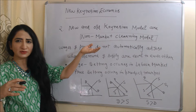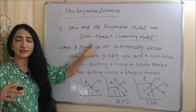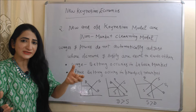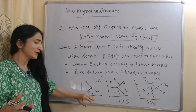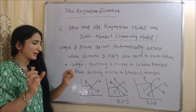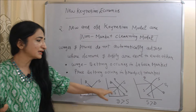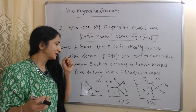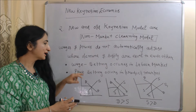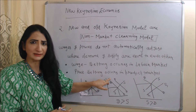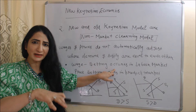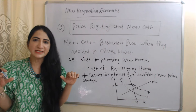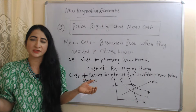Second, new and old Keynesian models are known as non-market clearing models, meaning prices and wages do not automatically adjust to where demand equals supply. That's why demand does not always equal supply — sometimes demand can exceed supply and sometimes supply can exceed demand. There is no automatic equilibrium. Wage setting occurs in the labor market where labor bargains for equilibrium wages, and price setting occurs in the product market where consumers bargain for prices.